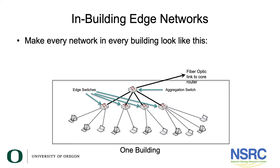So inside of each building, where we have these edge networks, we want every one of these networks to look like this, where there's fiber to your core location, you have an aggregation switch, you have edge switches that then provide service to individual computers or access points, or whatever you're serving inside of that building.